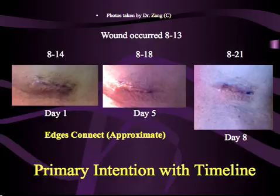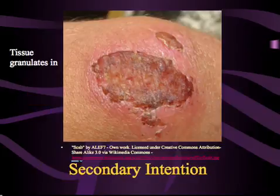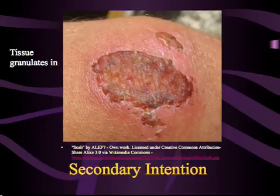Here we have an example of a wound that healed with primary intention. The edges are approximated and then sealed with a biologic glue. You can see the changes in the amount of swelling and erythema and redness over time. This slide shows you an example of a wound that healed with secondary intention. You can see that there was no way they could approximate or connect the edges of this wound. Tissue was lost and granulation tissue formed beneath this scab. Over time, repair and remodeling will continue and the wound will fully recover, however I expect this person will have a scar.